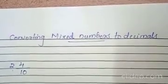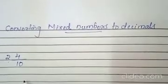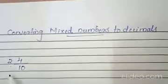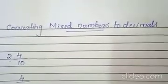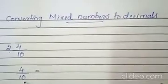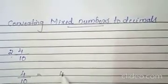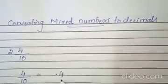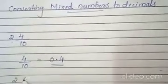We will convert this mixed number to decimal. First, write the whole number as it is — don't do anything with the whole number part. Then take the fractional part, four by ten. Look at the denominator — only one zero, so we move one place from the right. The whole number part is two, so we put a point and write four. It will be 2.4.